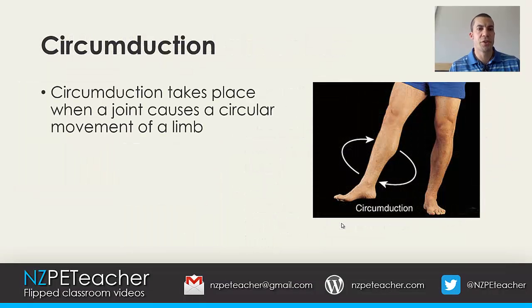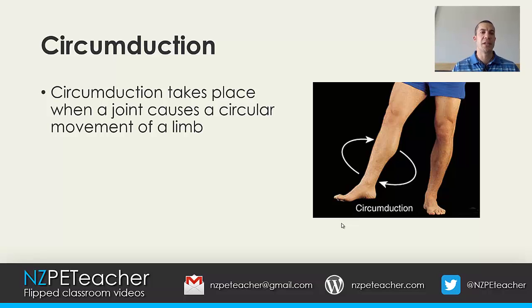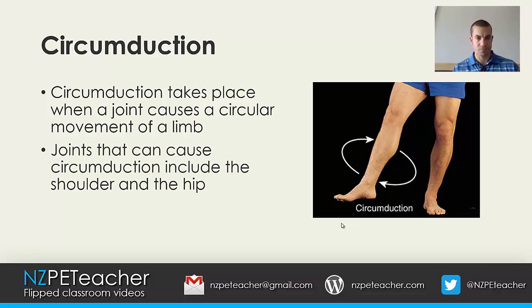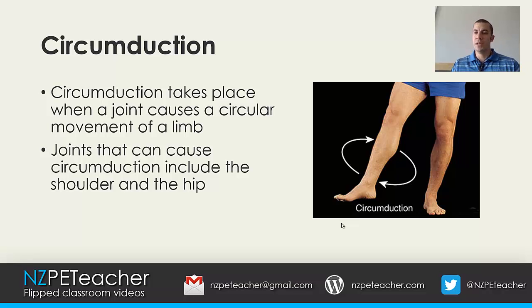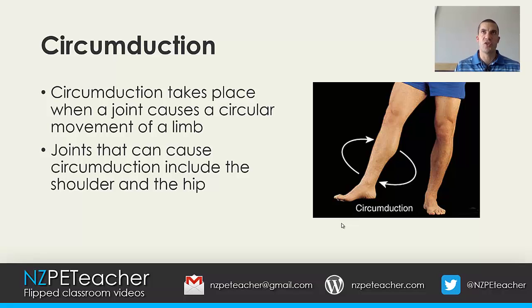Circumduction takes place when a joint causes a circular movement of a limb. Joints that can cause circumduction include the shoulder and the hip. If you're wondering what circumduction looks like: extend your leg, point your toe, and draw a circle with your toe — that movement is circumduction.